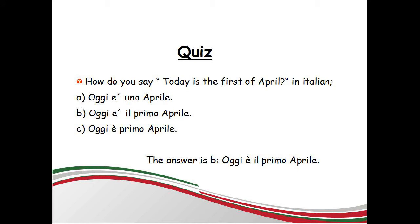In the previous lesson, you have learned the months of the year — i mesi dell'anno. There was also a quiz related to this topic. The question was: how do you say 'today is the first of April'? A. Oggi è uno aprile. B. Oggi è il primo aprile. C. Oggi è primo aprile. The correct answer is B: Oggi è il primo aprile.